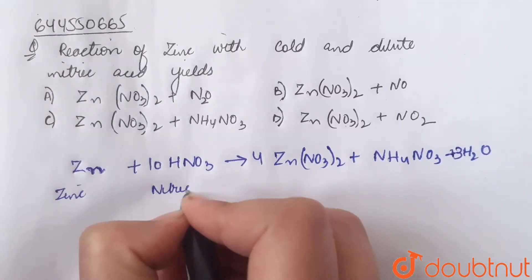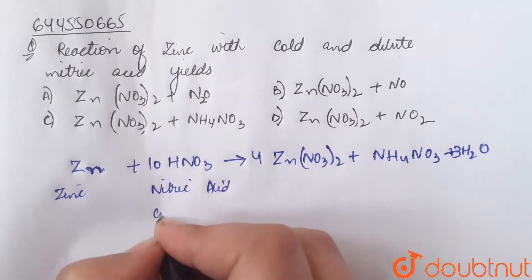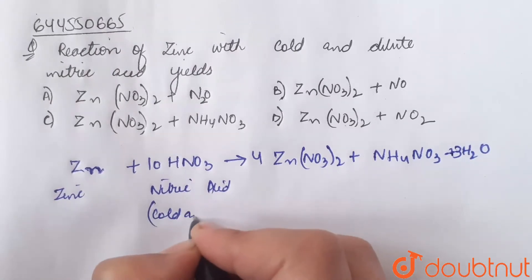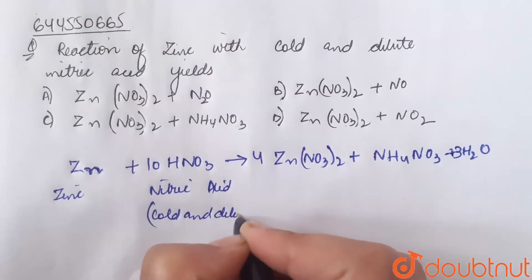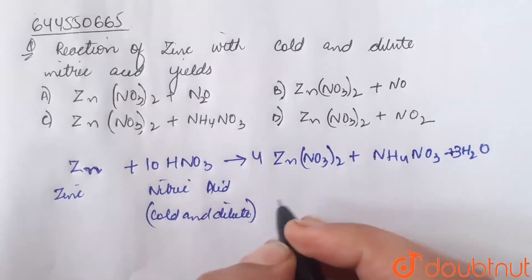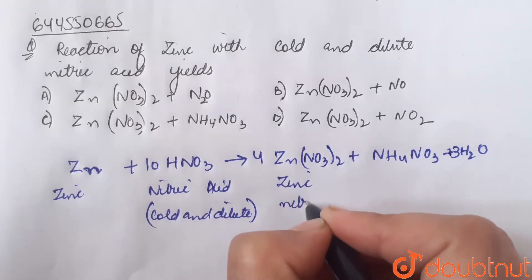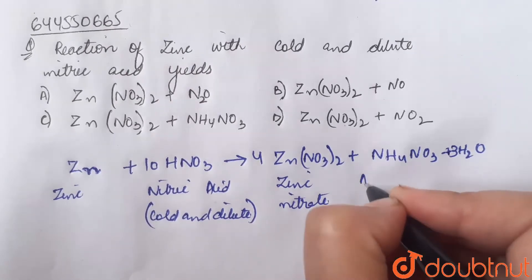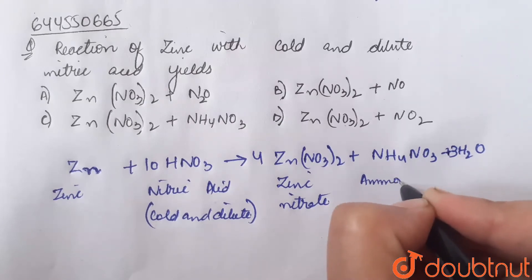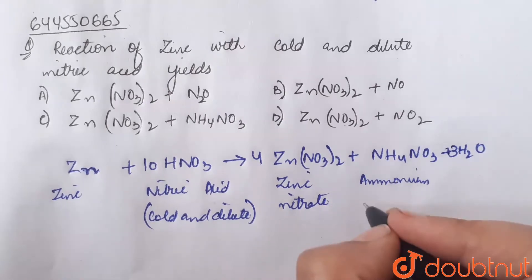Nitric acid which is cold and dilute yields zinc nitrate, ammonium nitrate, and water.